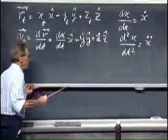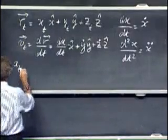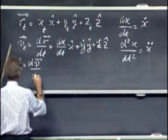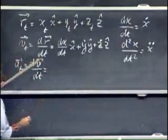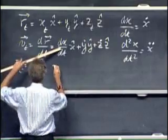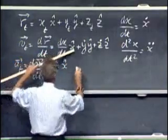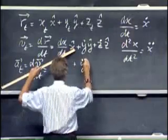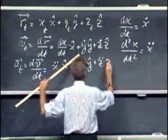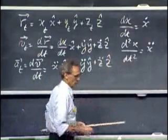What is the acceleration as a function of time? Well, the acceleration as a function of time equals dv dt. So that's the second derivative of x versus time, and so that becomes x double dot times x roof plus y double dot times y roof plus z double dot times z roof.